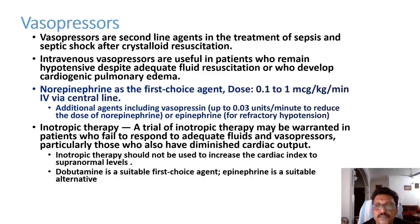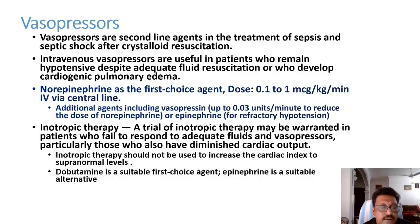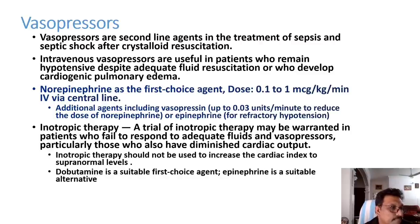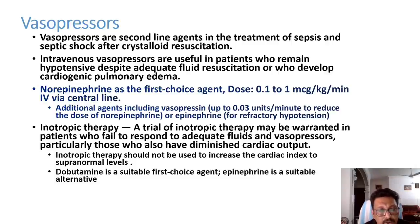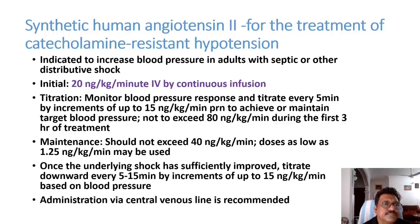Vasopressin at 0.03 units per minute can be added if maximum doses of norepinephrine are reached. If the patient has bradycardia, dopamine may be a good choice. If the patient has tachycardia, vasopressin is the second-line drug. If hypotension is due to cardiac dysfunction, dobutamine can be considered after the systolic BP has been raised to around 100 mmHg with norepinephrine. Never start dobutamine as a first-line drug in septic shock because its initial action is vasodilation, which further worsens hypotension.